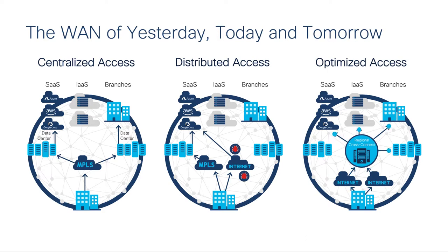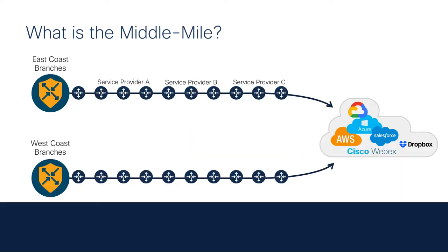This is where the notion of middle-mile optimization comes into play. The middle-mile is that area of the internet between your organization's edge and the cloud edge. At some point in your traffic's journey to the cloud, chances are you'll cross the middle-mile. The key is: how can we minimize the amount of time spent there, or avoid it altogether?